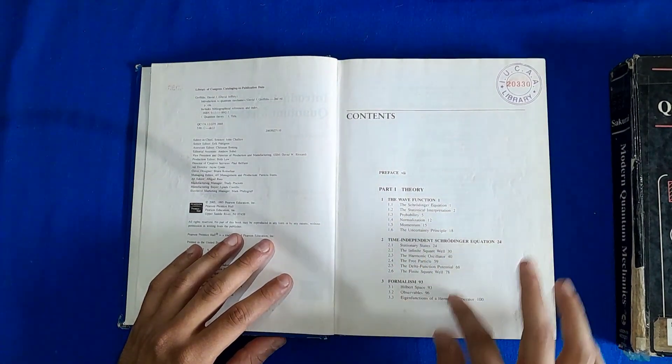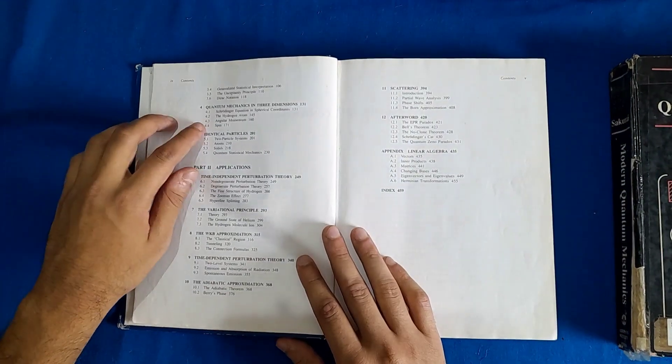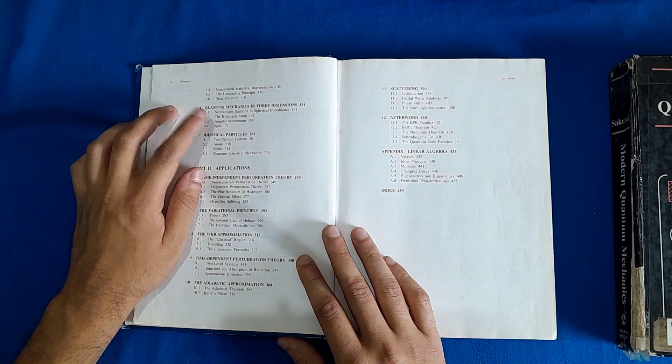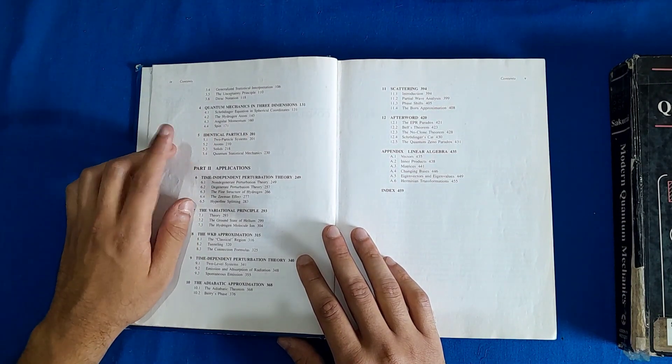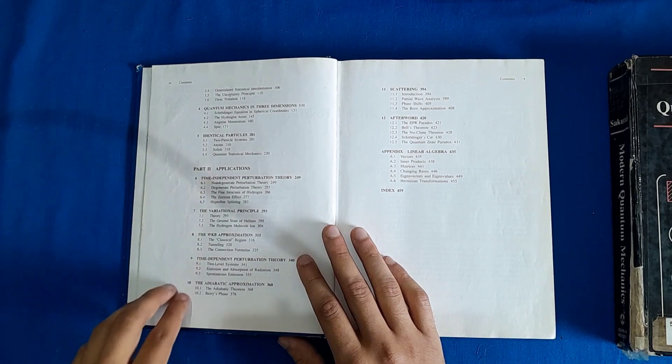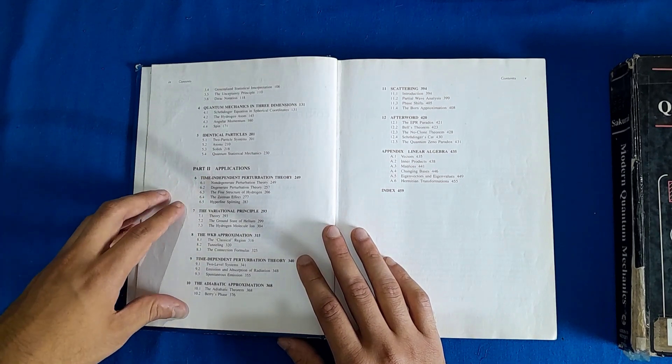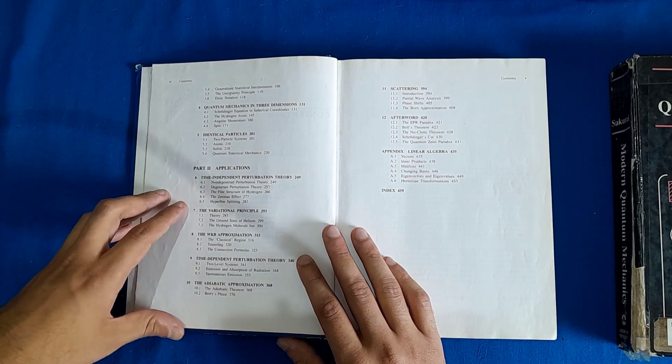So I'll just go through it. You have wave function, then the actual formulation of quantum mechanics, some formalism here, then application to hydrogen atom and angular momentum part is in this chapter. Then we have identical particles and then we go to some of the applications.